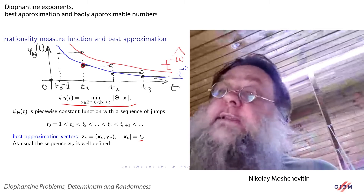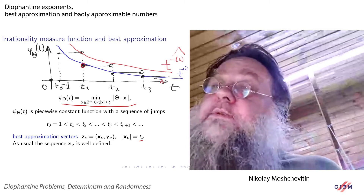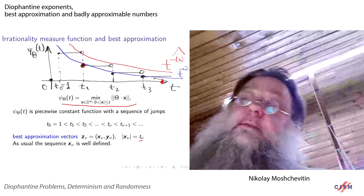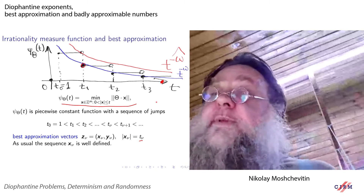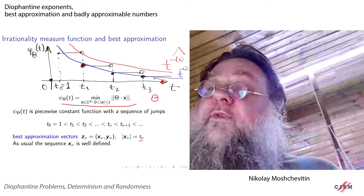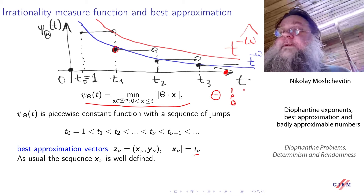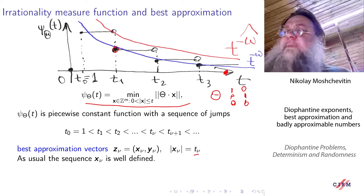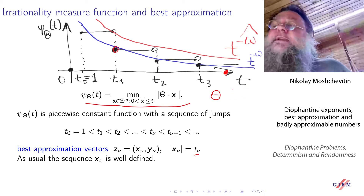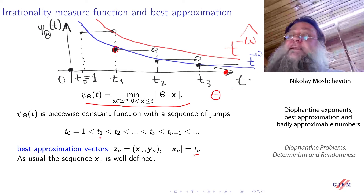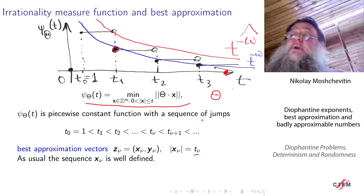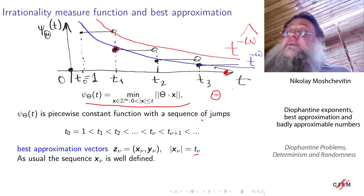It may happen that the function equals zero sometimes. When does it happen? It happens when the columns of matrix theta together with unit vectors have some kind of linear dependence over Z. In this case, the sequence of best approximations will be finite, so I will not be interested in this case.